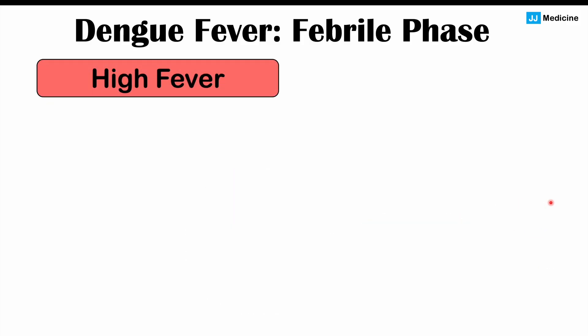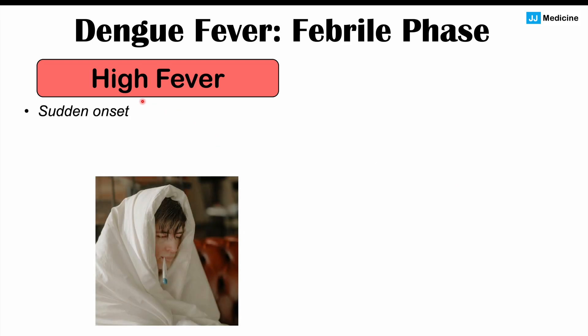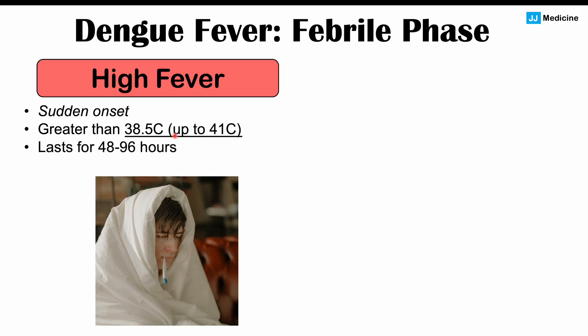Because of those cytokines being released, we're going to have a high fever — a sudden, abrupt onset of a high fever greater than 38.5 degrees Celsius, up to 41 degrees Celsius. The fever is going to last for approximately 48 to 96 hours, so anywhere from two to four days. In some individuals, especially children, the fever may resolve and then reemerge — this is what we call a saddleback fever.